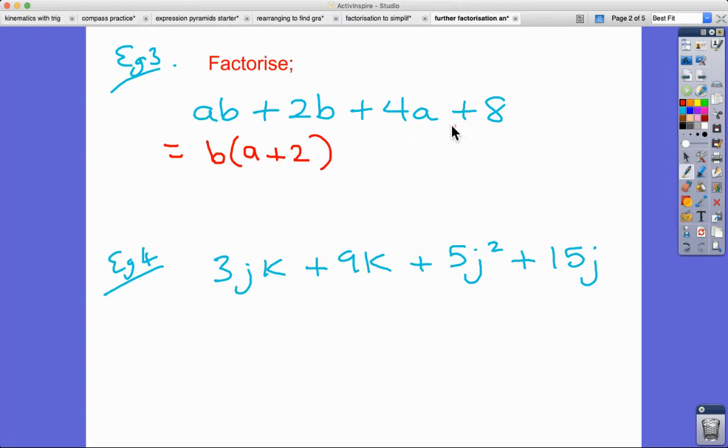In the second pairing of terms, we've got 4A and 8. Now, there's only A in one of them, so A doesn't come outside of the bracket, but 4 and 8 have a highest common factor of 4. And now what goes inside the bracket? A plus 2. Well, fancy that, they match. So A plus 2 is actually a factor of both of these terms.